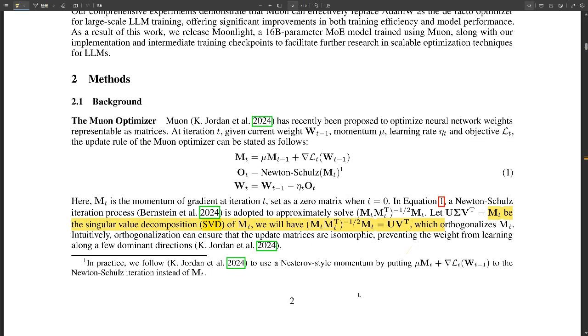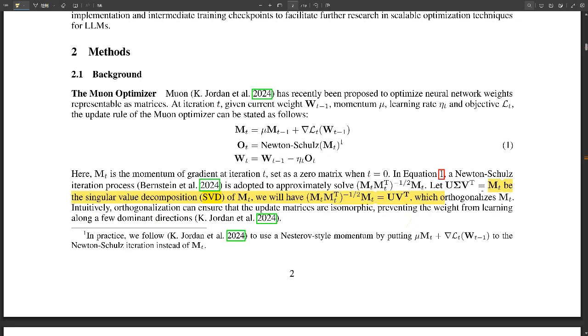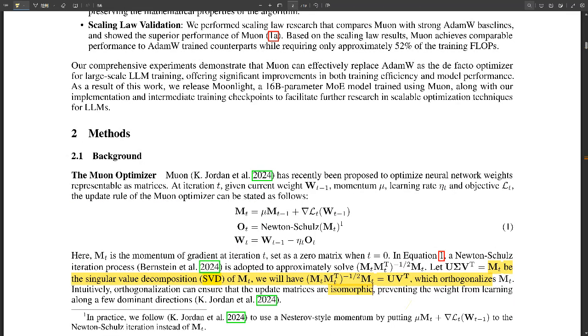Yeah, I was going to say, sounds like math. Put simply, it's about making sure that the model learns from diverse aspects of the data. It's preventing the model from getting stuck on just a few dominant patterns, and it helps it explore a wider range of possibilities. So instead of just sticking to the well-trodden path, it's kind of encouraged to explore all the side trails and maybe find some hidden gems along the way.